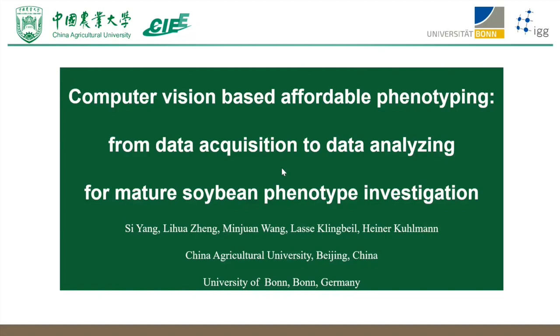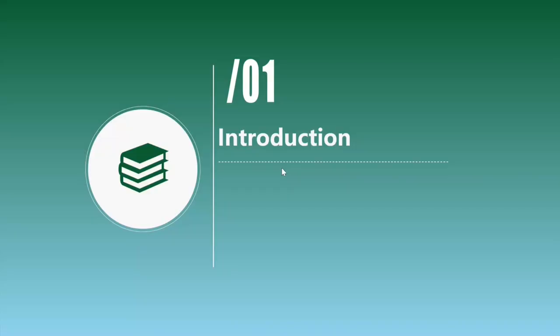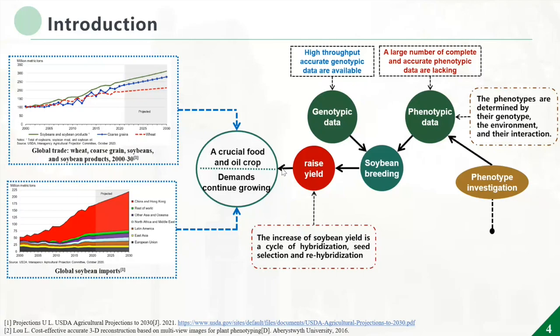Actually, it's my PhD research. The soybean is a crucial food and oil crop and the demand for soybean is continuing to grow. So we need to raise the yield of the crop, and the yield depends on three parts: the pods per plant, the seeds per pod, and the seed size. Raising yield is a cycle of hybridization, seed selection, and re-hybridization. For soybean breeding, we need high-throughput genotypic data and phenotypic data.